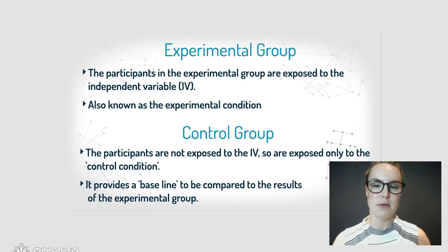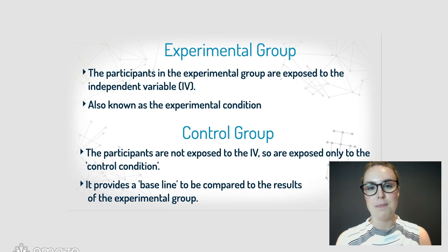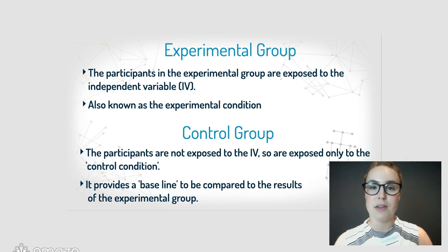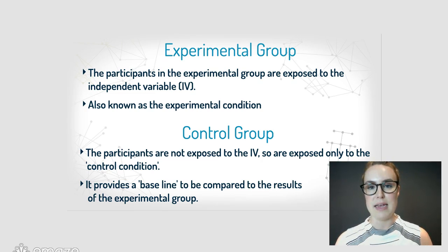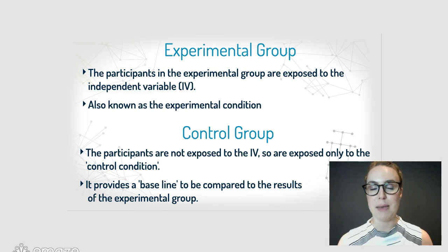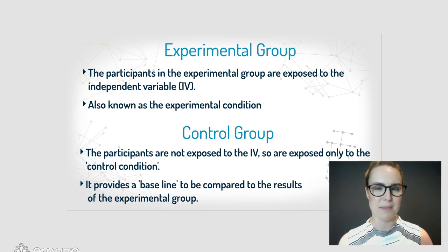The experimental group contains participants exposed to the independent variable, also known as the experimental condition — this is the group researchers are most interested in, for example varying alcohol consumption levels. The control group, on the other hand, is not exposed to the independent variable; everything is kept constant and they're only exposed to the control condition. This establishes a baseline — for example, participants who have no alcohol show us what a normal reaction time looks like.